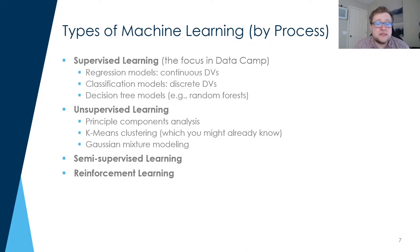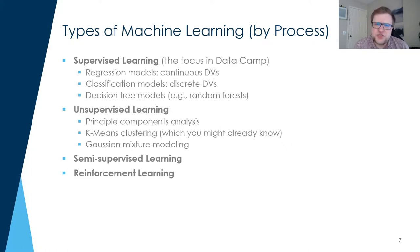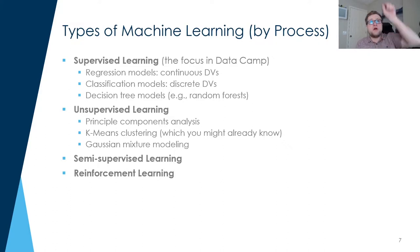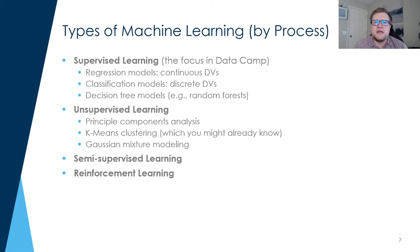Classification models are for when you have dichotomous or polytomous data — two, three, four, however many categories as your DV. We also have decision trees, which are usually a type of classification model but can also be regression models, where you're making decisions in a hierarchical fashion — trying to figure out the ultimate prediction goal by asking what if we split it this way? That covers things like trees and random forests, random forests being a very popular type of supervised learning model which you've probably heard of before.